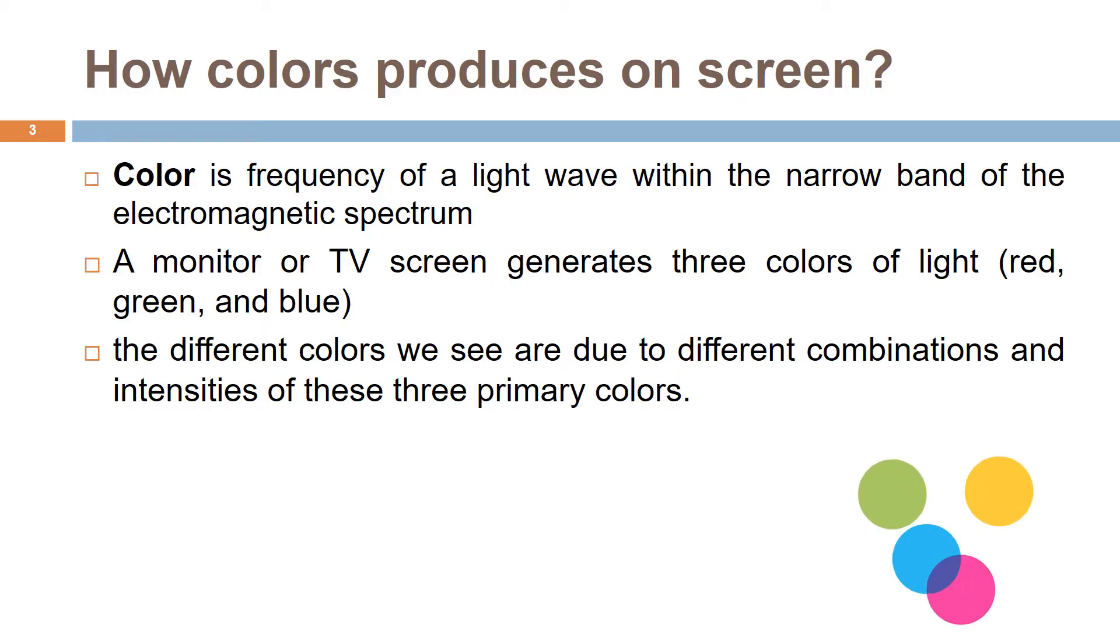Now, let's learn how colors are produced on screen. Basically, colors are corresponded by seven wavelength ranges within the visible spectrum. Color from a computer monitor or TV screen results from a different process than due to reflection.